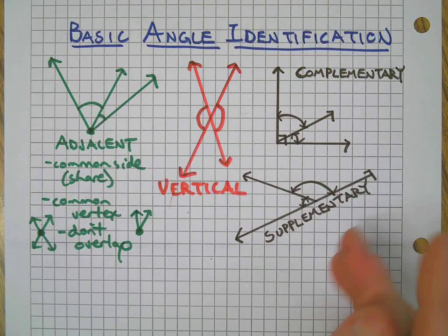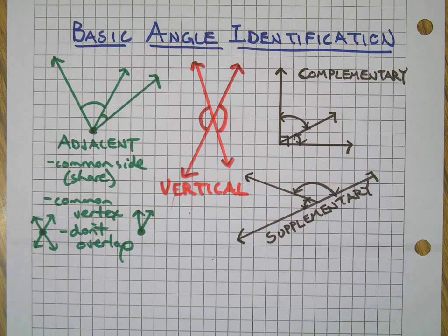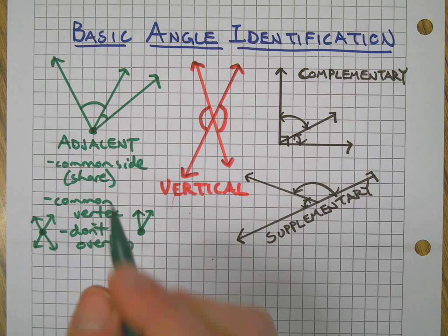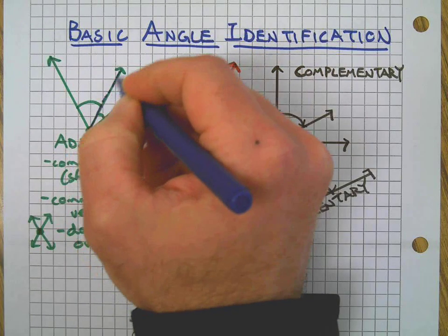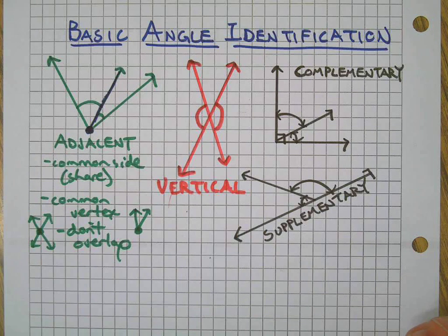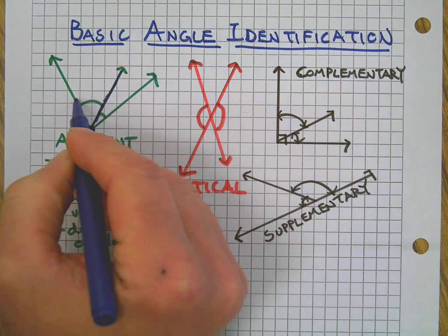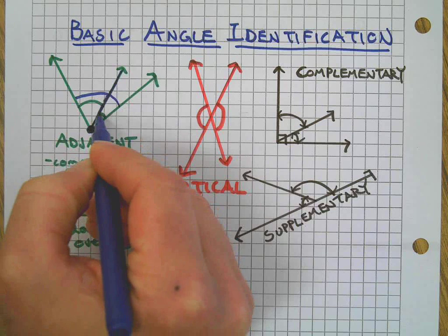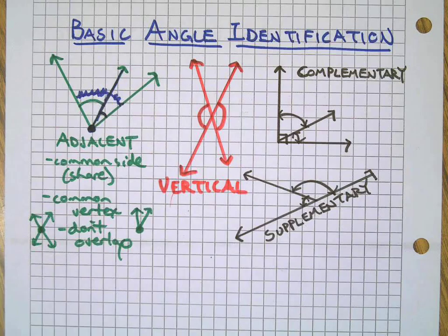In a second video we'll focus on what adjacent angles are not and do some practice. This is what they are — a common side, a common vertex, and they do not overlap. For example, if two angles overlap they would not be adjacent.